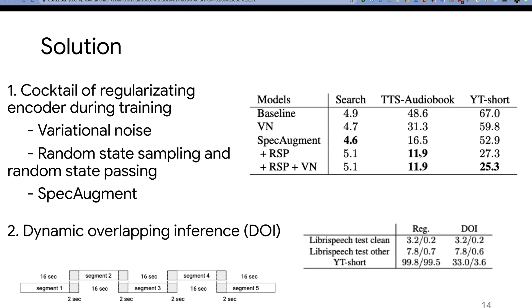By understanding the problem, we propose two groups of solutions. First, we try different kinds of regularization methods to regularize the encoder during training. We call that a cocktail method, which includes variational noise, random state sampling and random state passing, and SpecAugment. The cocktail works well. After this cocktail method, the word error rate reduced from 67% on YouTube data to 25%.